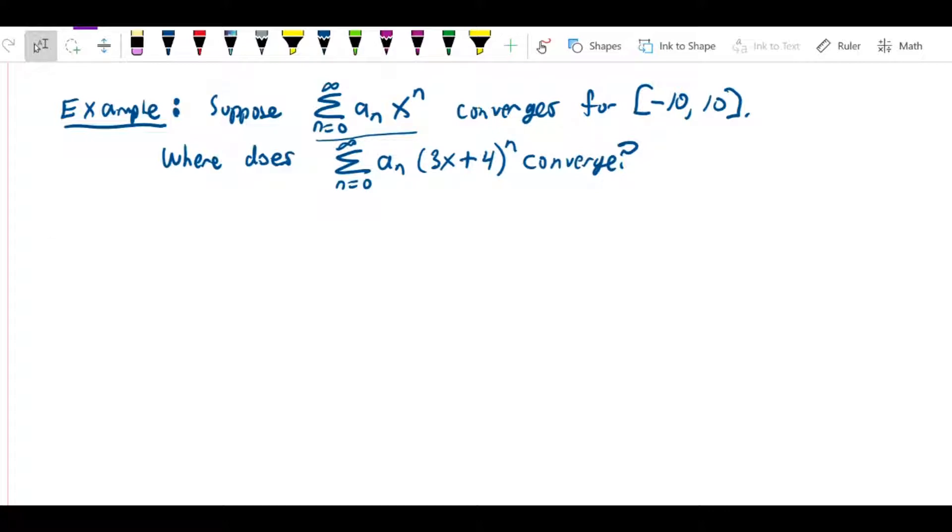The question is what this says about where the series a_n times (3x+4)^n converges. So we can figure it out from this, and let me show you how.